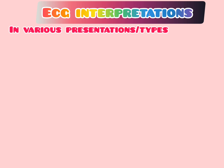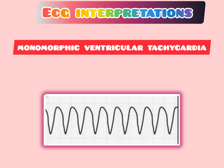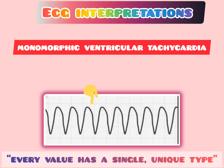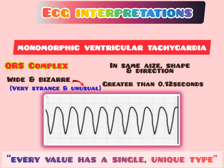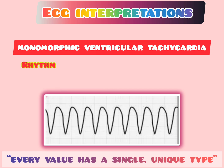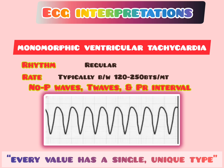Looking at ECG interpretations, V-TAC appears in various presentations. The first is monomorphic ventricular tachycardia, where every beat has a single unique type. As you can see, the QRS complex has the same size, shape, and direction, and is wide with a duration greater than 0.12 seconds. The rhythm is regular with a rate typically between 120 to 250 beats per minute. P waves, T waves, and PR interval cannot be assessed because ventricular contractions are so fast.